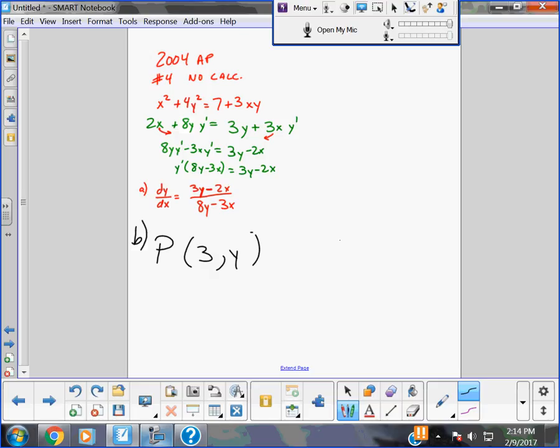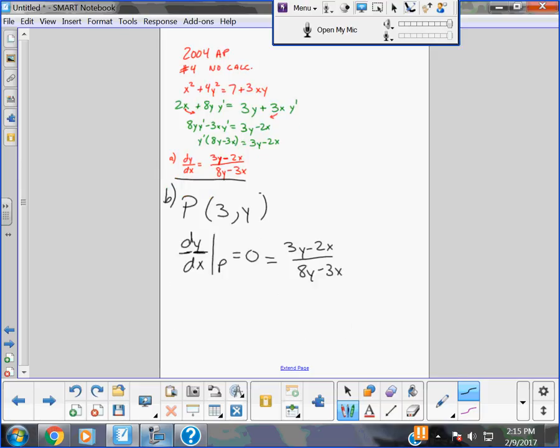So we are going to go to part B. Part B says show there is a point P with an x coordinate of 3, which is tangent, line tangent to the curve at P is horizontal. Find the y coordinate of P. That's a mouthful. And again, if you want to have a copy of this, just look on the internet. Show there is a point P with an x coordinate of 3. You guys agree that the point is 3 comma y? At which the line tangent to the curve at P is horizontal.